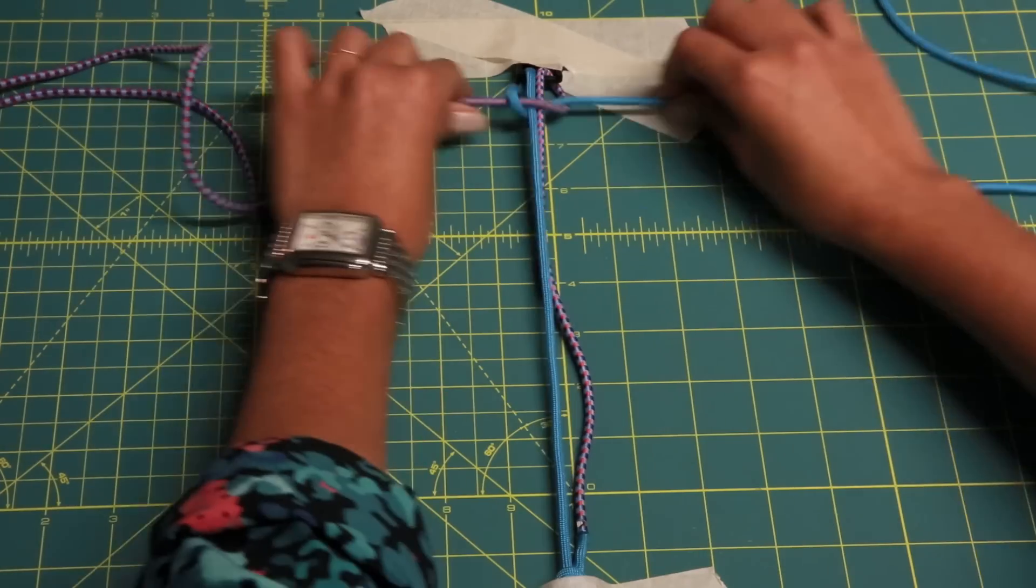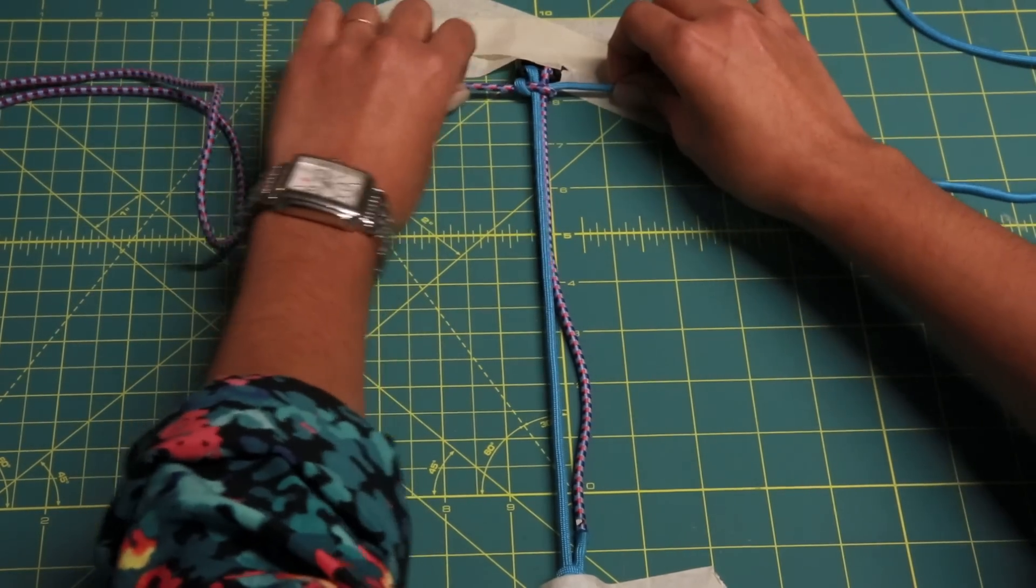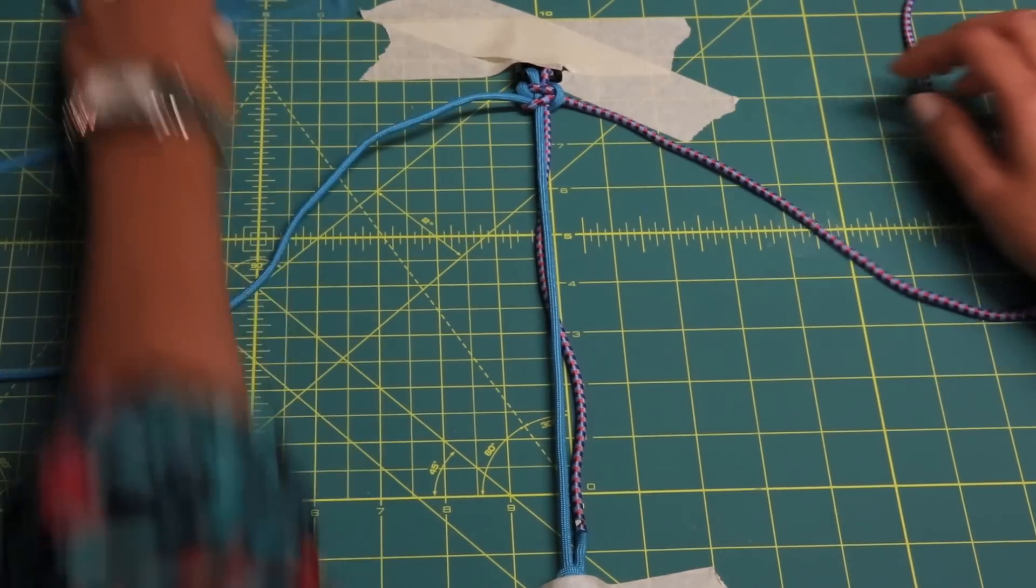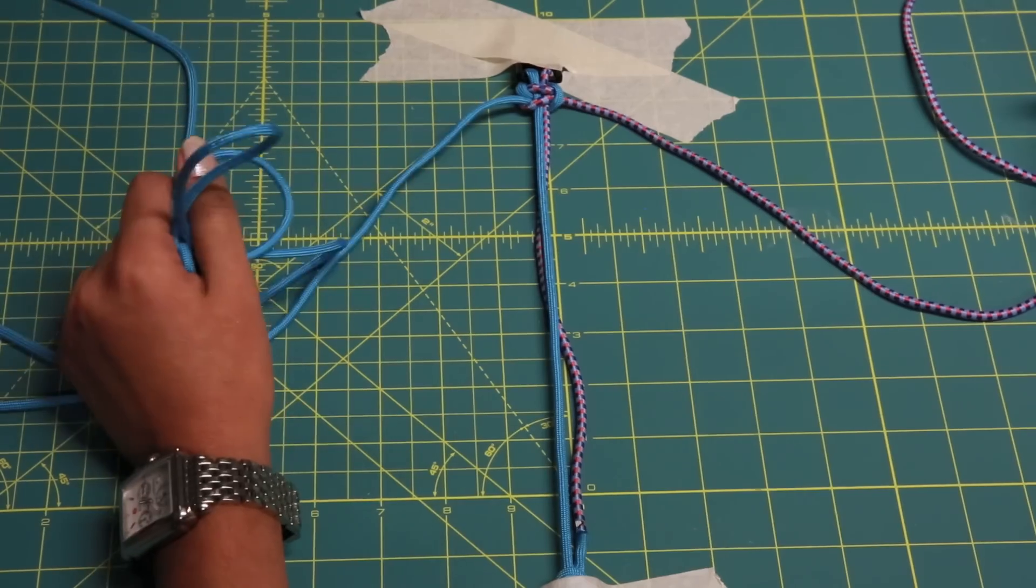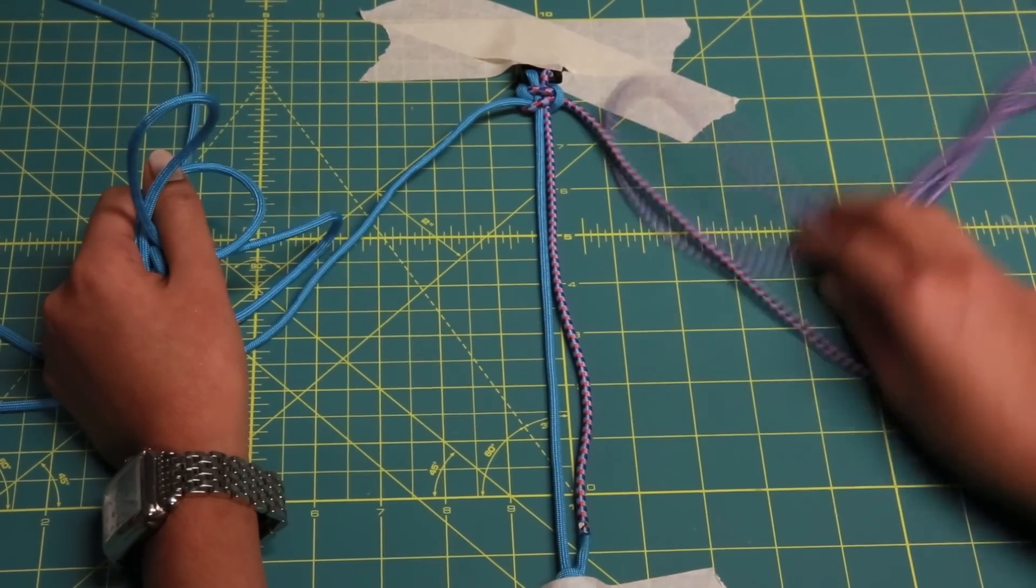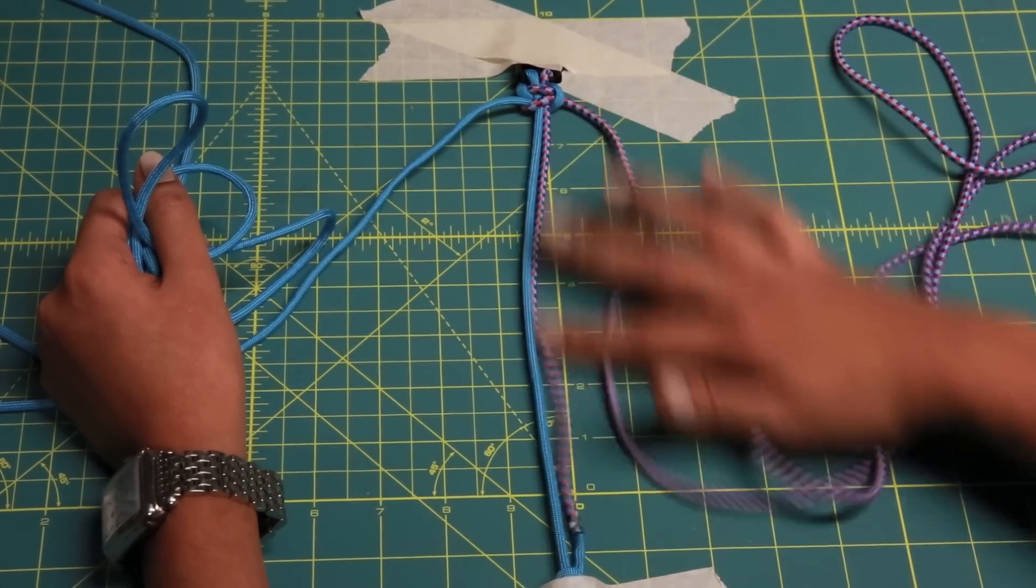And then you just tighten it and then you repeat. So whatever you did with the blue cord, you're going to repeat all the way down. And whatever you did with the pattern cord, you're going to repeat it all the way down.